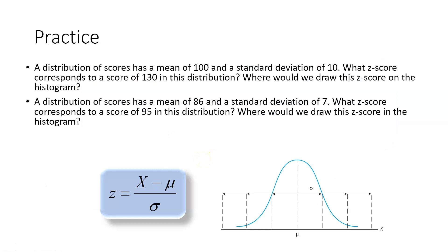Let's practice. A distribution of scores has a mean of 100 and a standard deviation of 10. What z-score corresponds to a score of 130? Pause your video and work through that using the z-score formula. Hopefully you figured out that x equals 130, the mean is 100, and the standard deviation is 10, which gives a z-score of 3. To plot that, you carry 1, 2, 3 standard deviations above the mean — that's where the score lands.